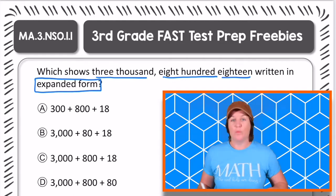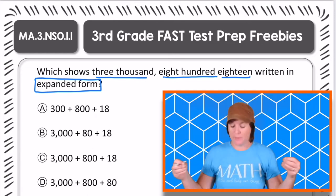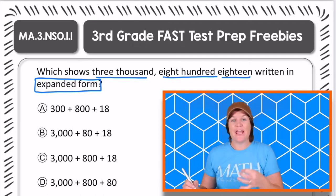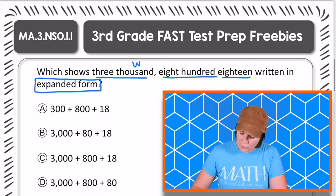Okay, so we're looking for which one shows expanded form. That's where we're stretching out the values of the number. So right now we have 3,818. This is word form.